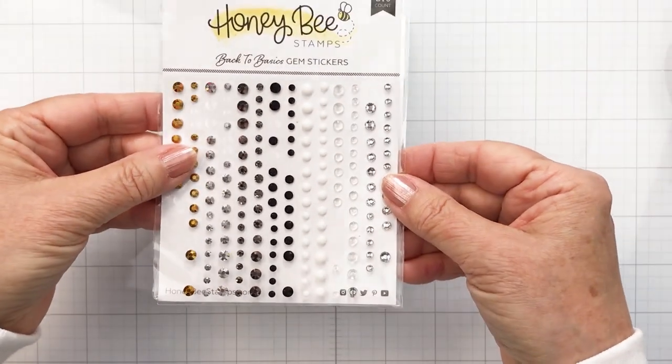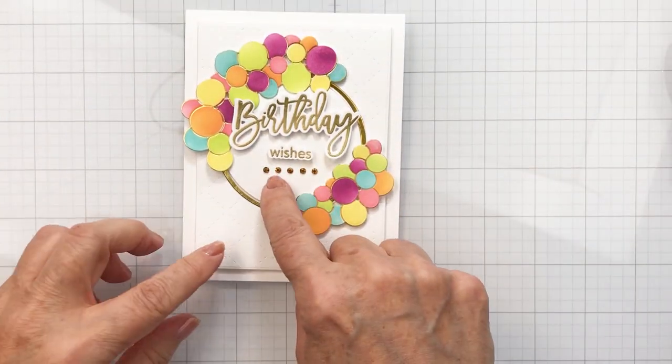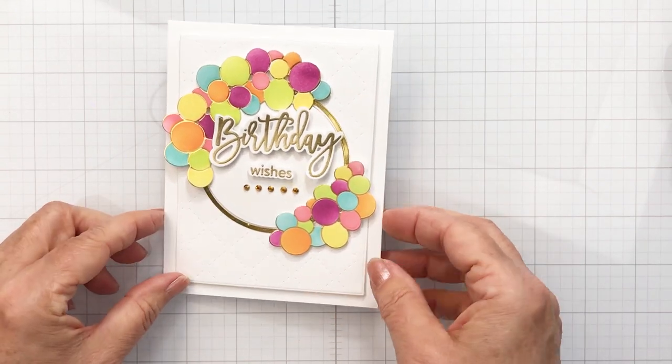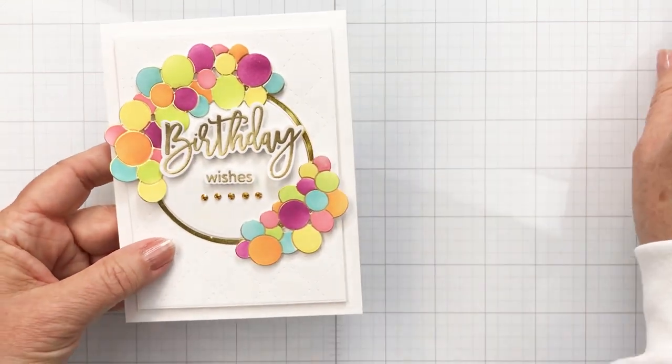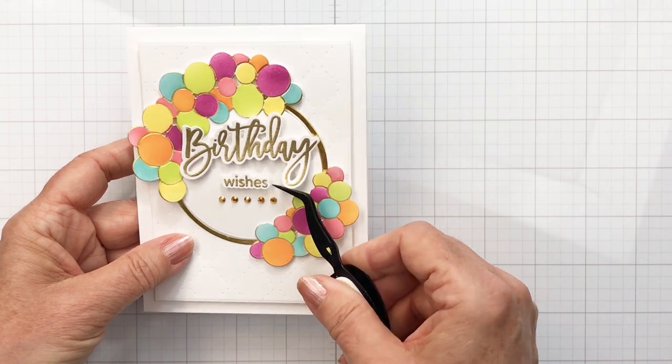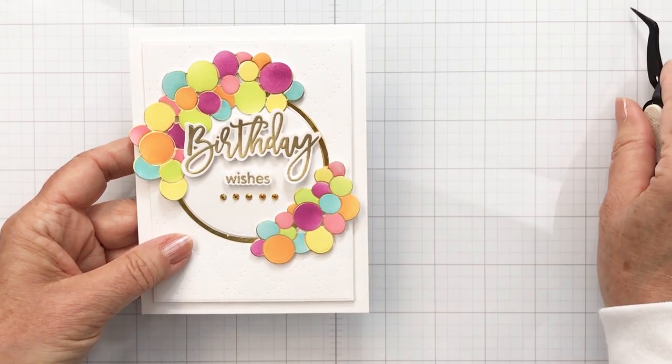I really wanted to add a little bit of something underneath the word wishes so I've got my basic gems here. These are gorgeous and I've added five of those underneath the word wishes there just to kind of fill in some of that space as well with a little bit of bling. I just love that gold bling there. I'm just straightening out the word wishes a little bit so I really love how that looks.